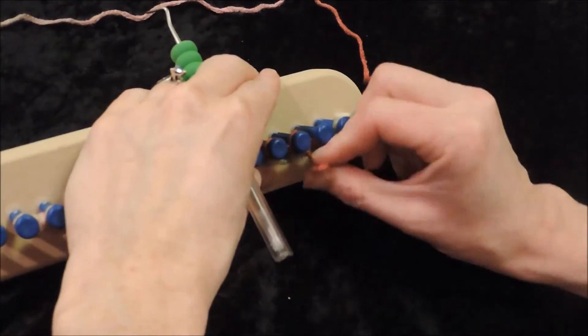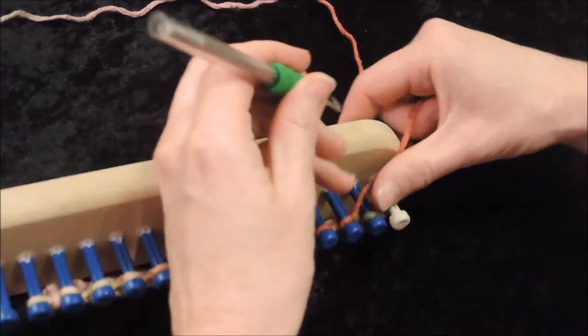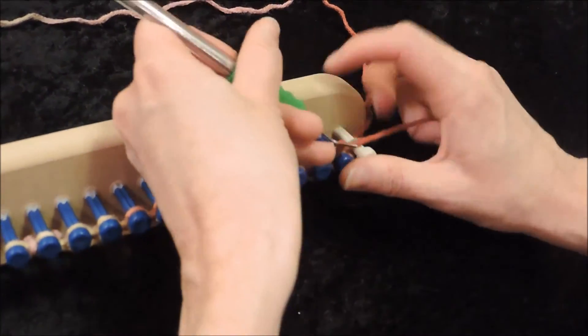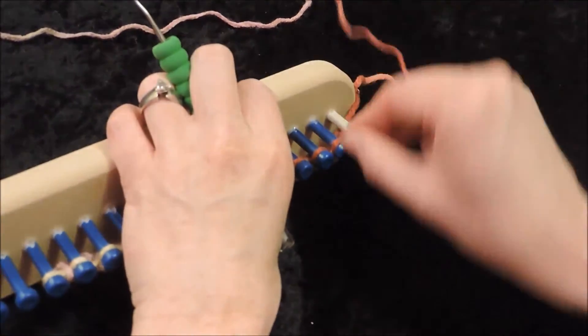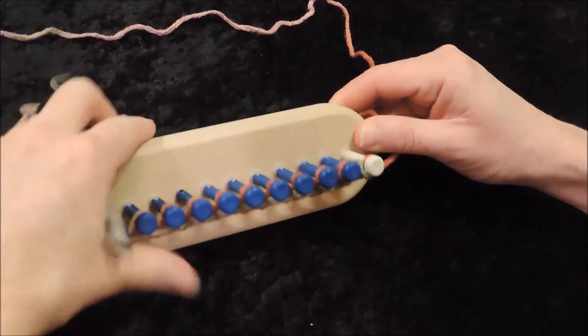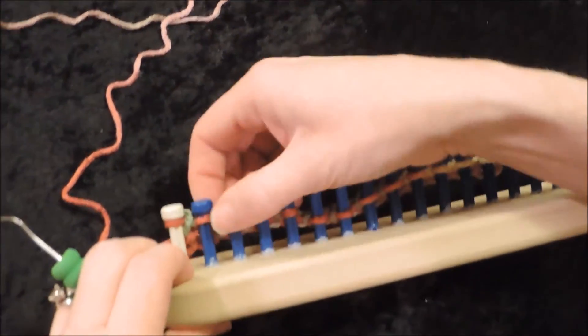But when I get to the very last peg I always have to e-wrap my last peg on the row. Even if it's a purl row. Here I am at the last peg and I'm going to e-wrap around that. Now I'm turning it back this way. It's facing me again.